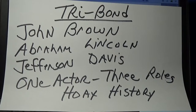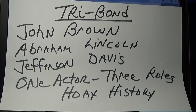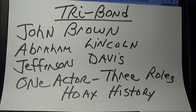Try Bond. What I hope to show you in this video is that one actor played three roles in hoax history: that abolitionist John Brown is Abraham Lincoln, who is Jefferson Davis.